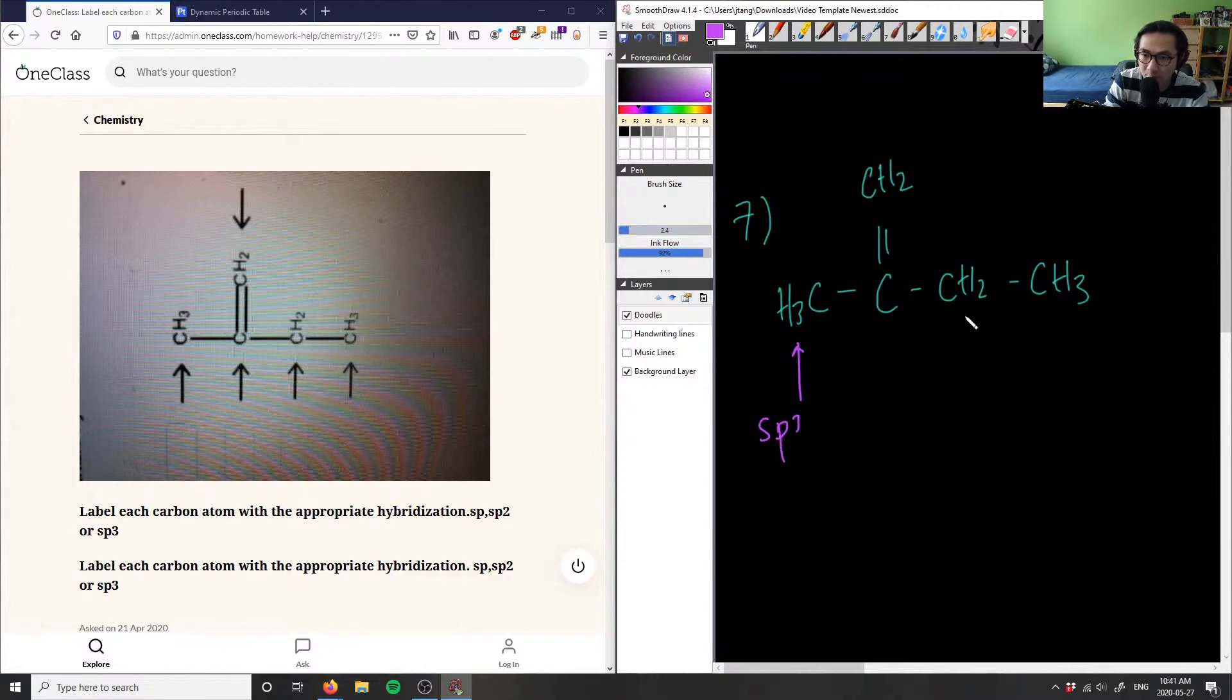And this guy here is sp3. And again, sp3 yields my tetrahedral carbon here, so it has to be single bonded here. And CH2 here is different, right? These guys here, this here is double bond, right? So this double bond changes things here.